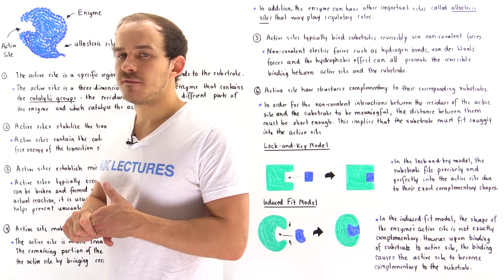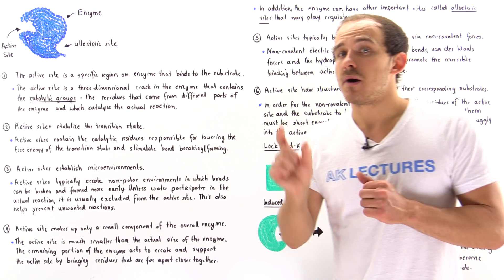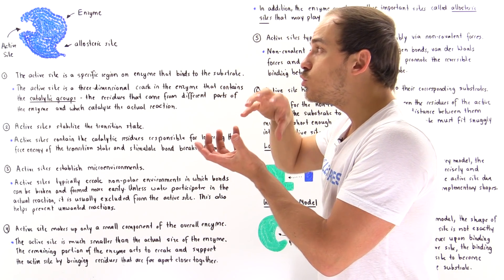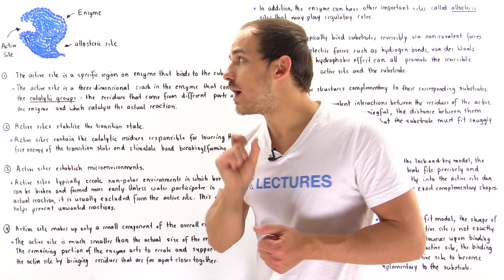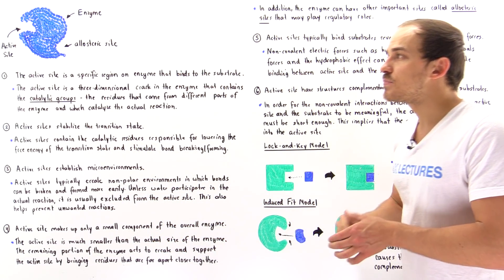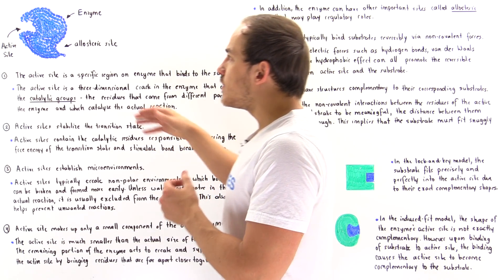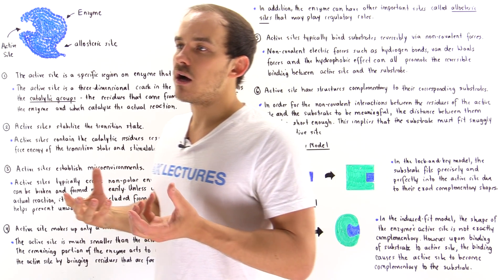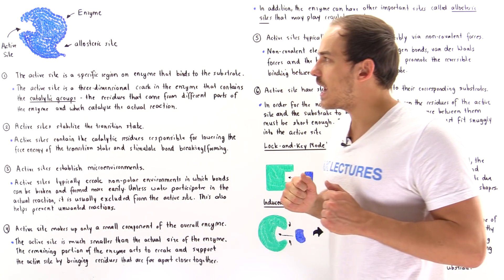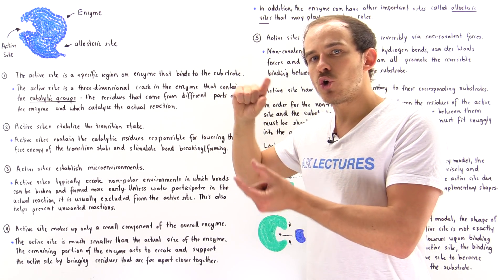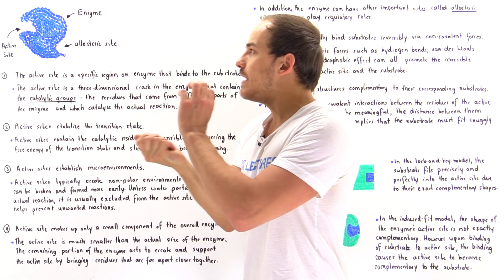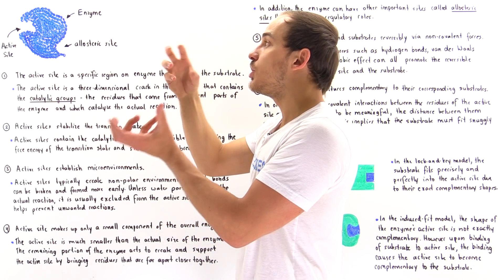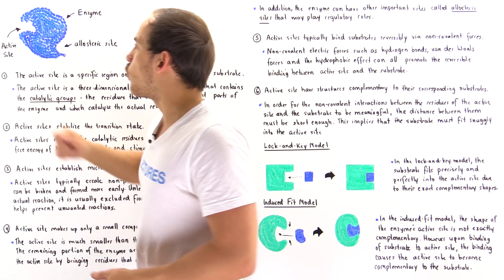Property number four: active sites actually only make up a very small portion of the overall enzyme. Even though the enzyme is usually relatively large, the active site is quite small compared to its overall structure and size. The residues involved in the active site are usually found very far apart from one another on the primary sequence of the polypeptide chain, and to bring those residues close together, the entire enzyme has to fold into a particular three-dimensional shape many times over.